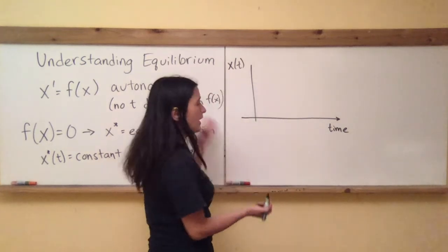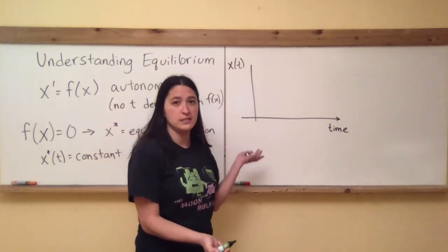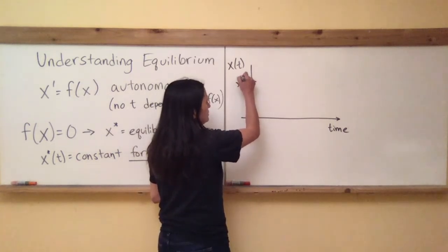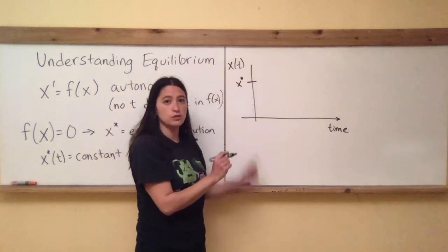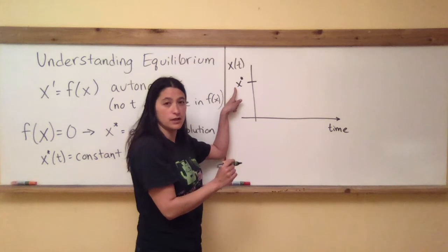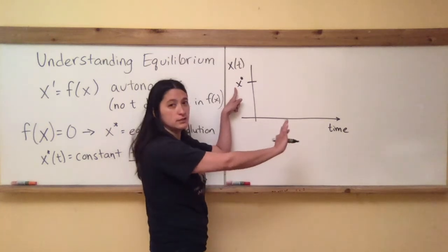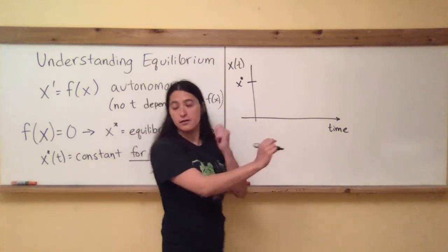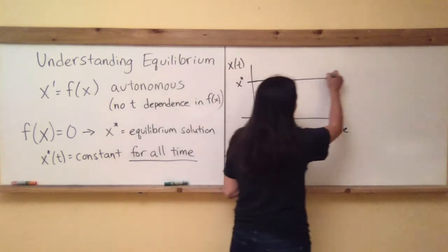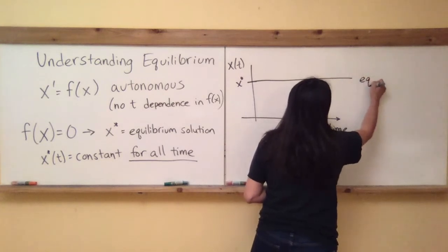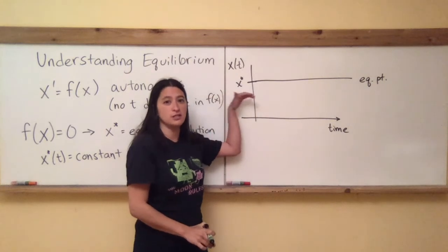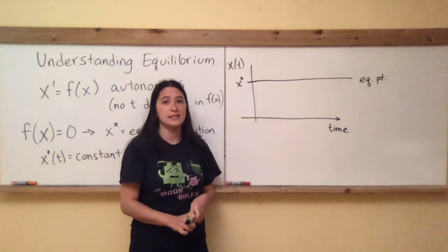Let's say I had some state equations, some f of x that I solved, and I found an x star located at a particular value of x. What does this solution look like for all time? It's got to be a constant, so it's going to be a horizontal line for all time. That's known as an equilibrium point or an equilibrium solution — it's unchanging, which is why we call it an equilibrium.